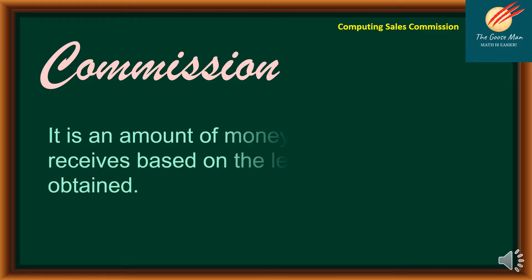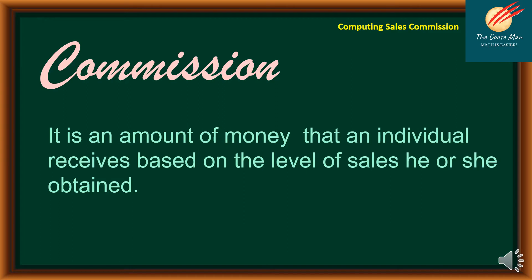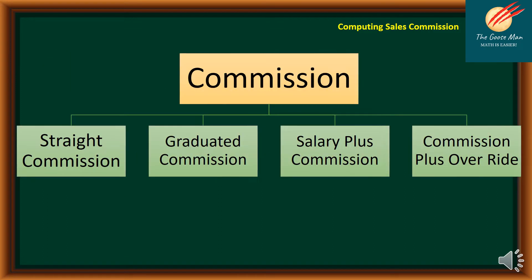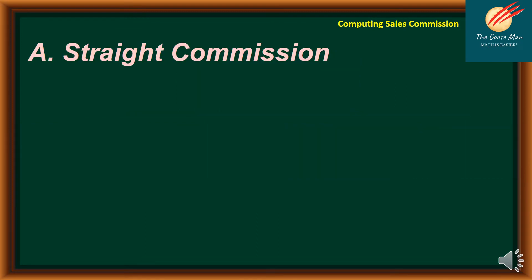Commission is an amount of money that an individual receives based on the level of sales he or she obtained. There are types of commissions: straight commission, graduated commission, salary plus commission, and commission plus override.